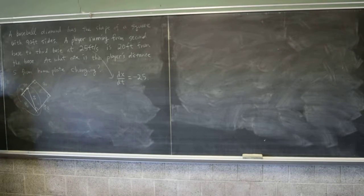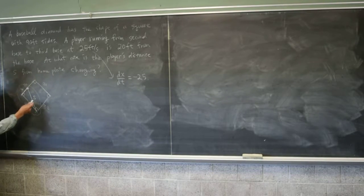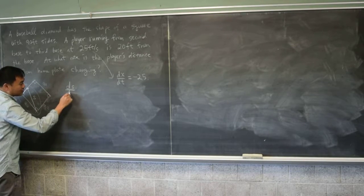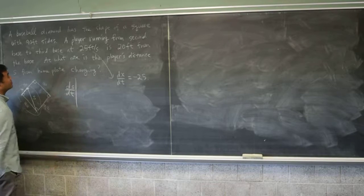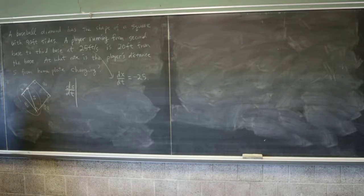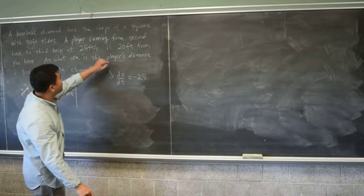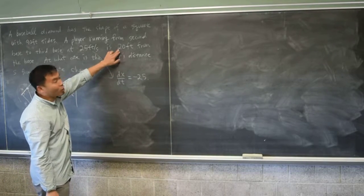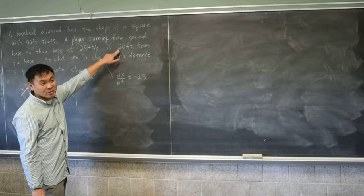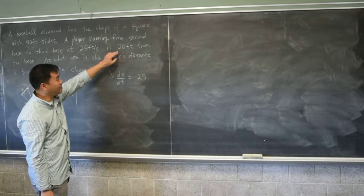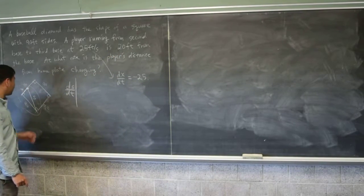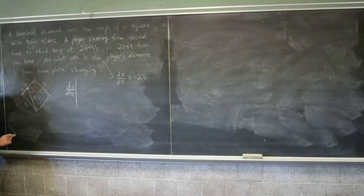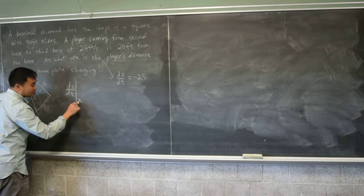And then the question is how fast s is changing. So it's ds/dt. And then what? When. When. When. X equals 20. Yeah. So here it doesn't say when, but you can kind of see that he's not always at 20, right? So this is the question being asked at that moment. At the moment when the person is at 20 feet from the third base, this question is being asked, right? So you should say x equals 20.